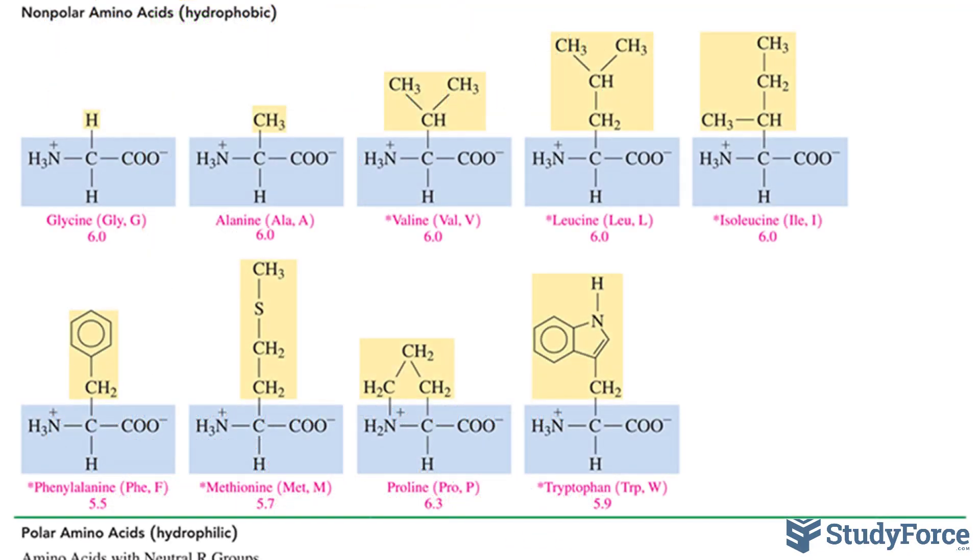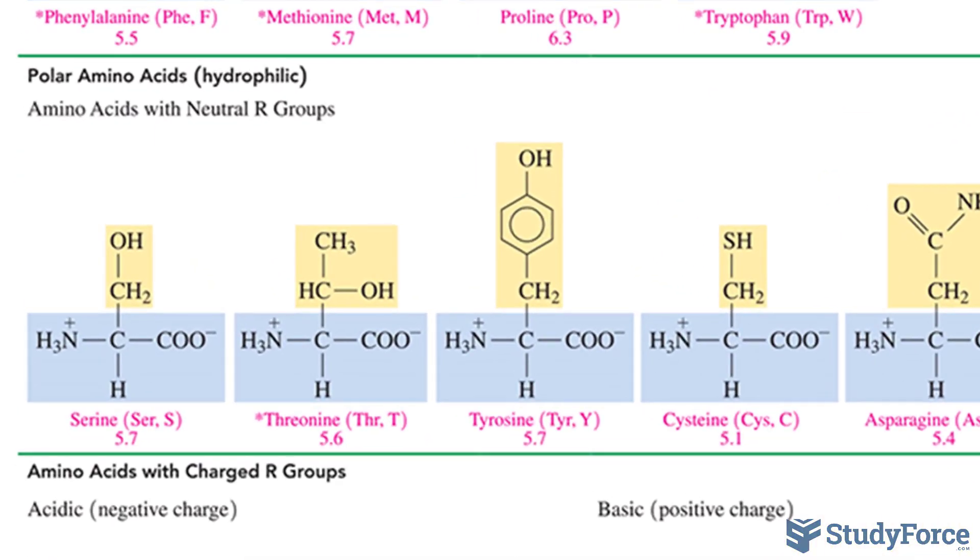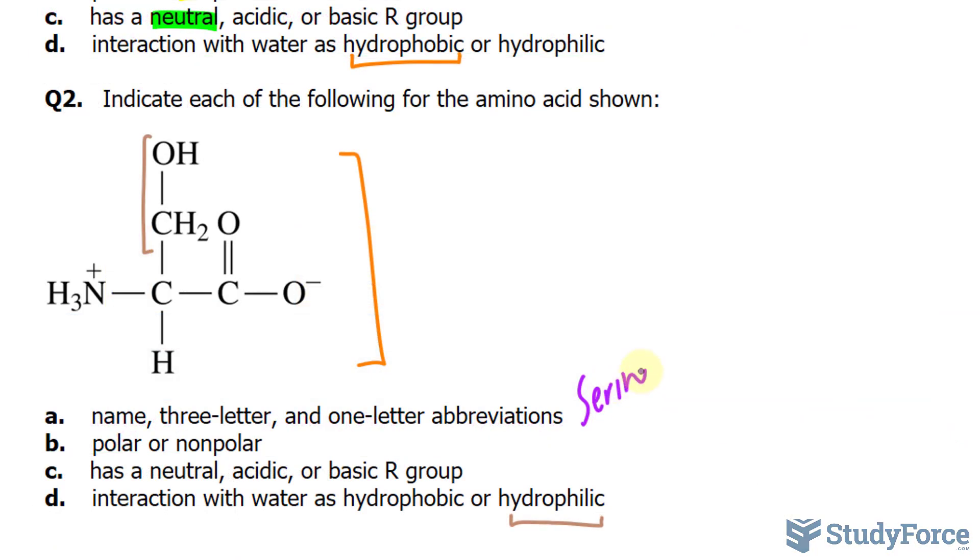Taking a look at the chart again, as you can see from the chart that when you have CH2 bonded to OH as the R group, we're dealing with serine. So I'll write that down: serine, that's S-E-R, and the one-letter abbreviation is S.